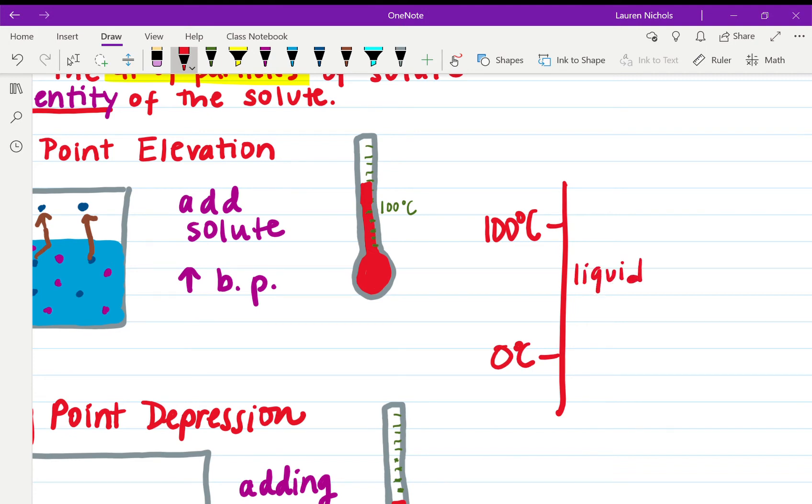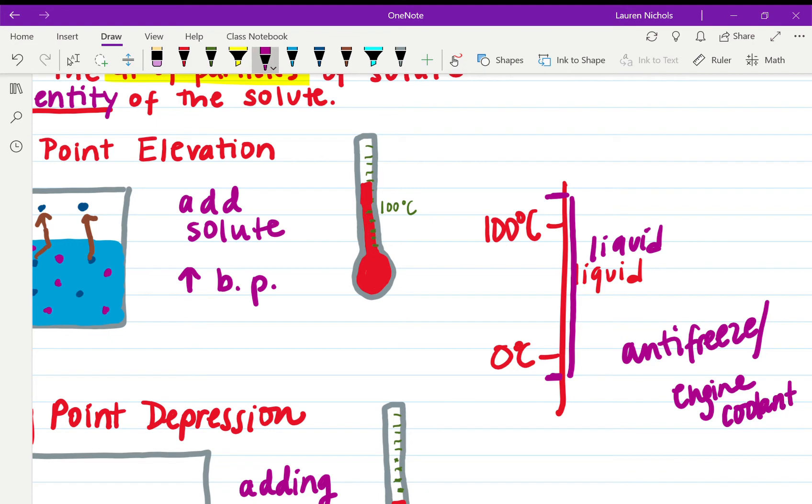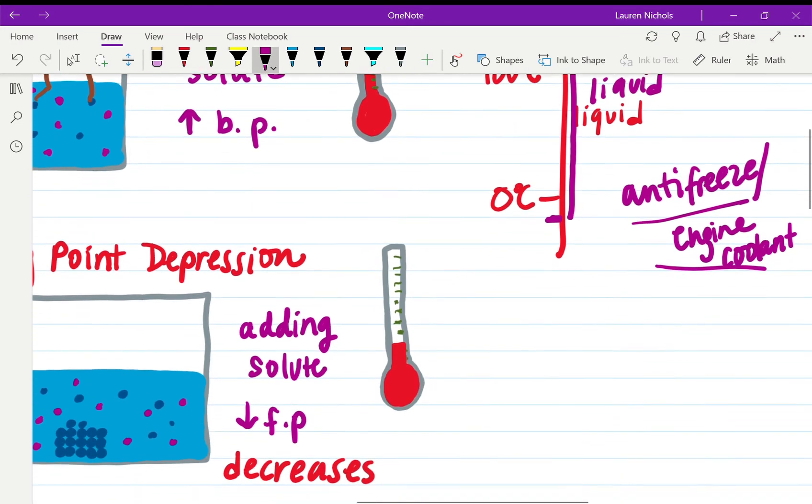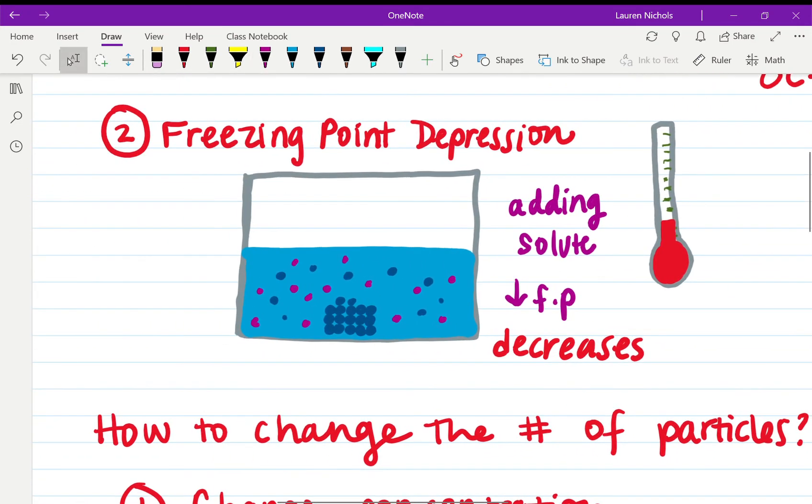Adding a solute will increase the boiling point and decrease the freezing point, which will increase the whole range that water remains a liquid. Which is why it's very helpful in antifreeze or engine coolant depending on what time of season it is. If you have water plus other things in there mixed in with the water, ethylene glycol, it will help keep your engine and your car from freezing during the winter because the water now has to get much colder in order to actually freeze. And it can prevent your car from overheating during the summertime when it's getting extremely hot.